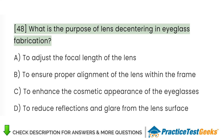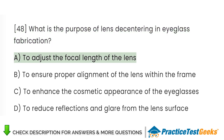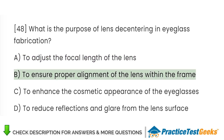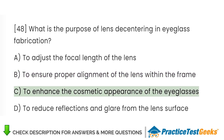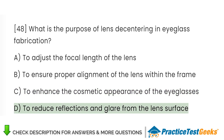What is the purpose of lens de-centering in eyeglass fabrication? A. To adjust the focal length of the lens. B. To ensure proper alignment of the lens within the frame. C. To enhance the cosmetic appearance of the eyeglasses. D. To reduce reflections and glare from the lens surface.